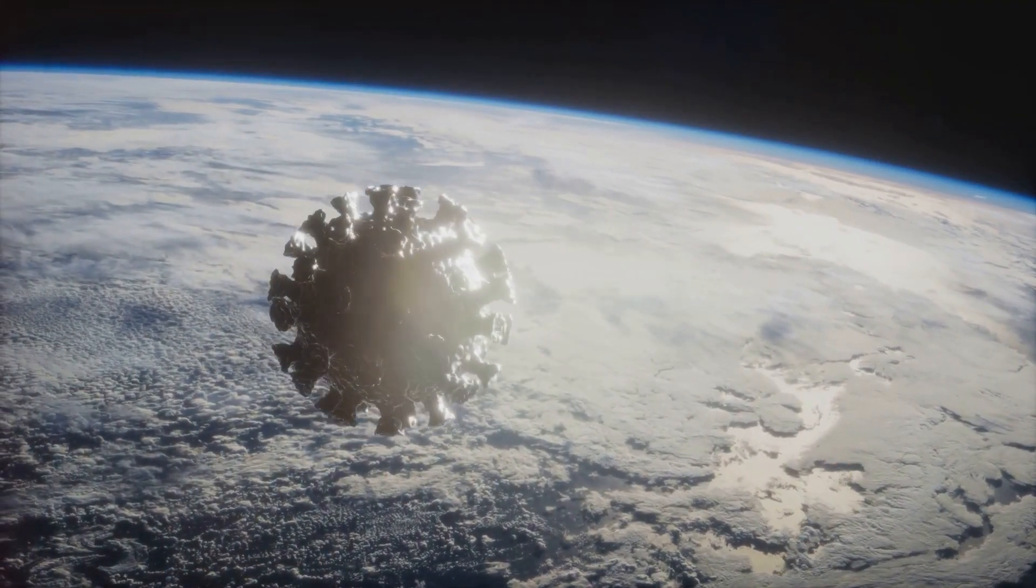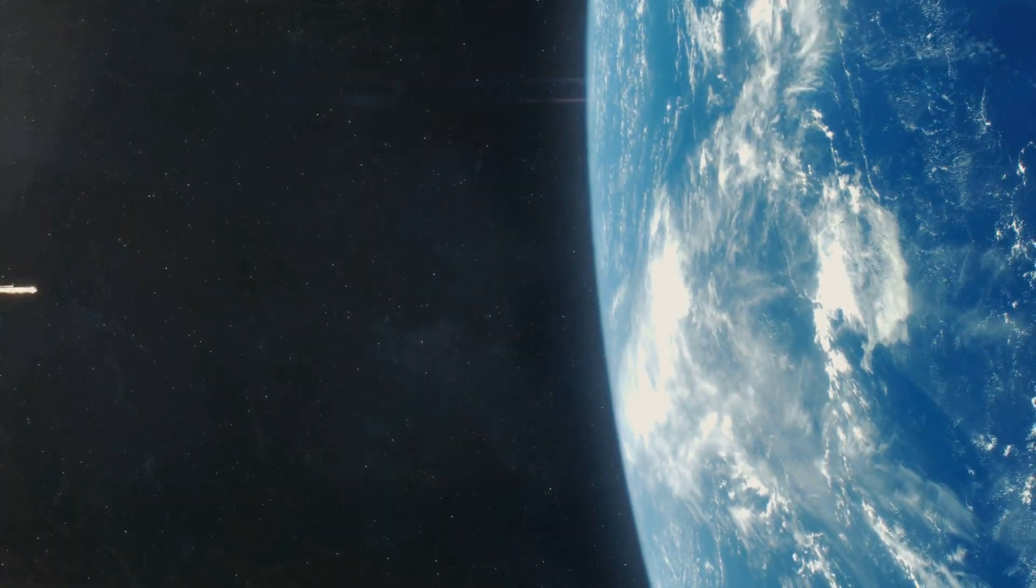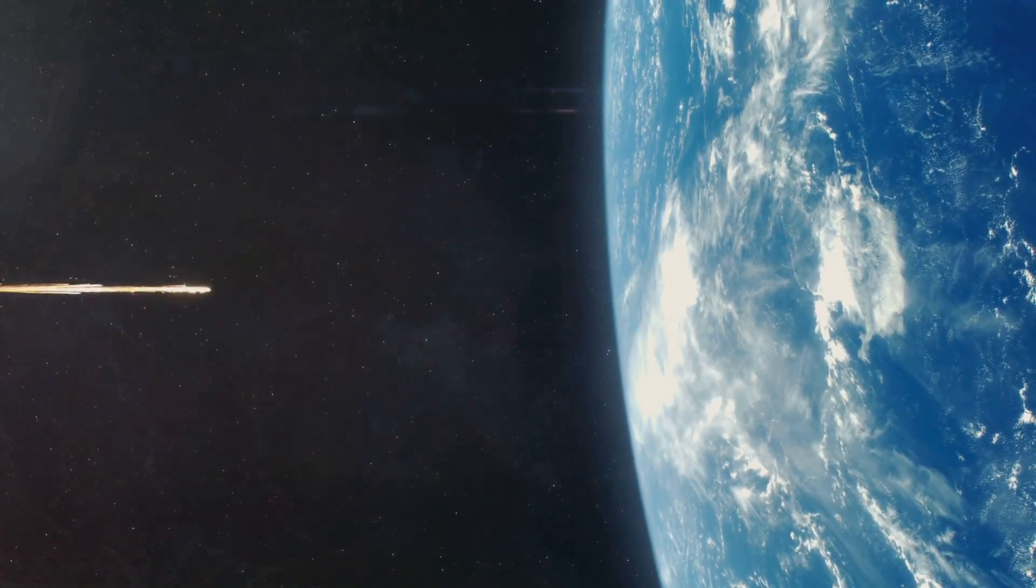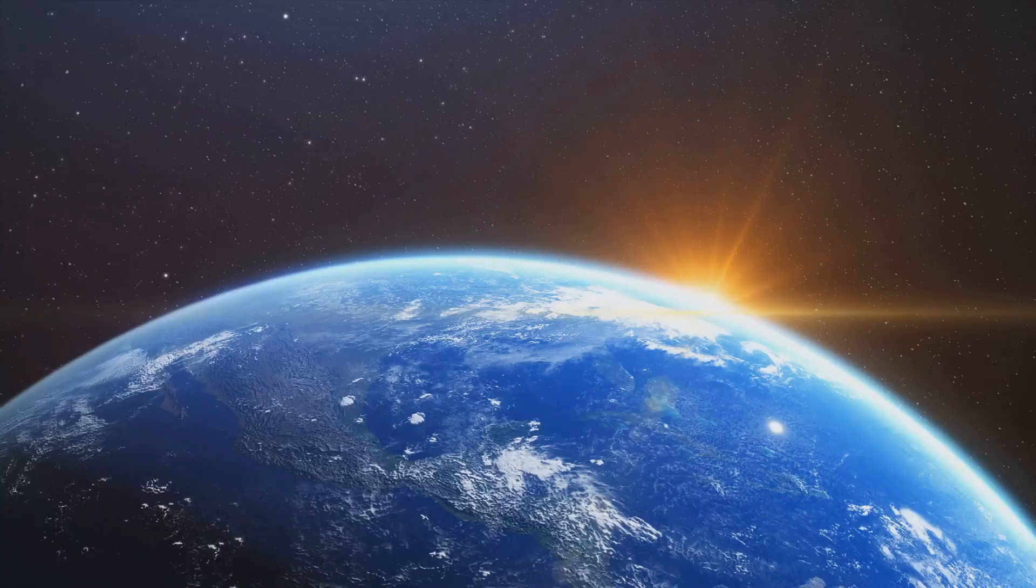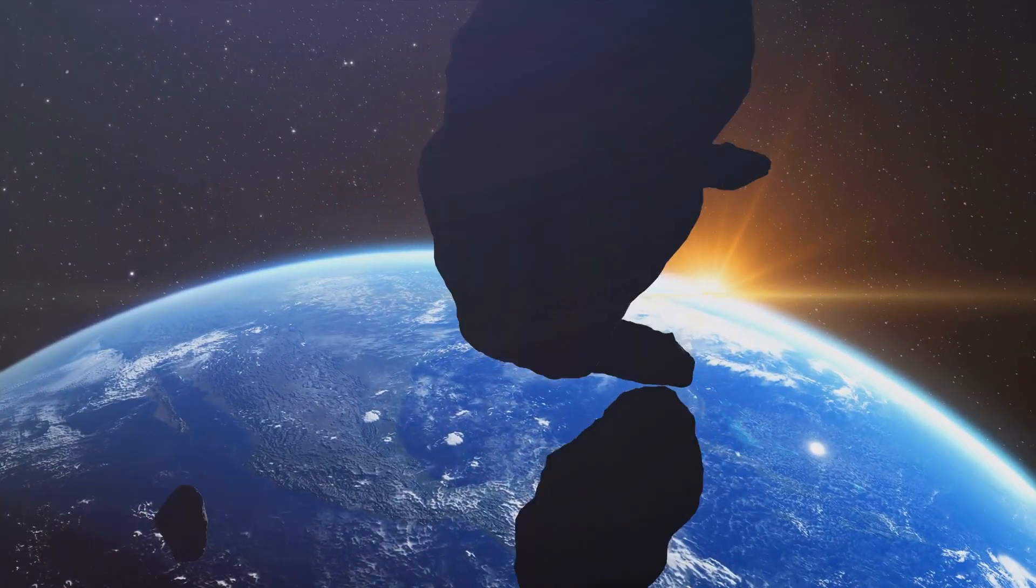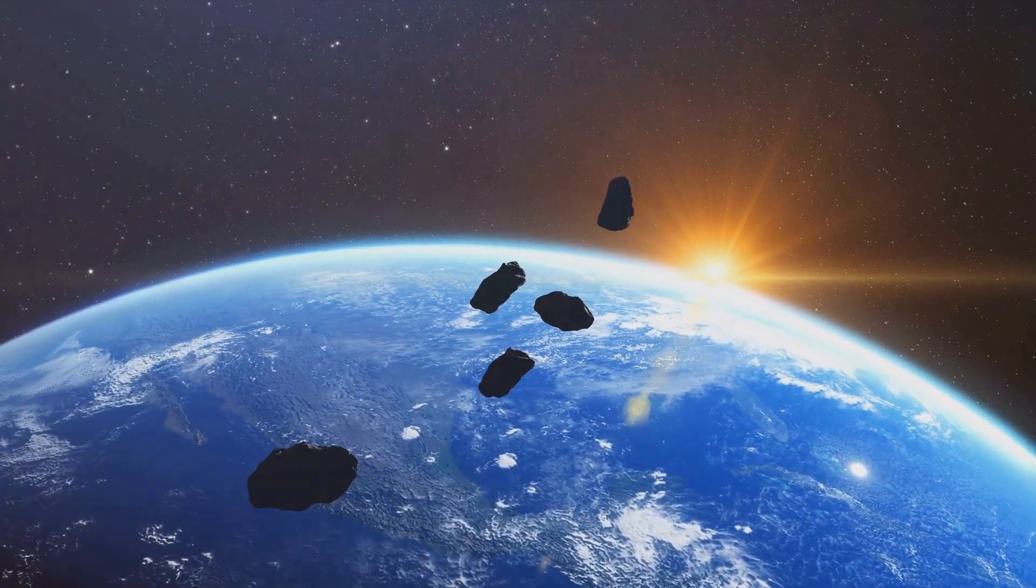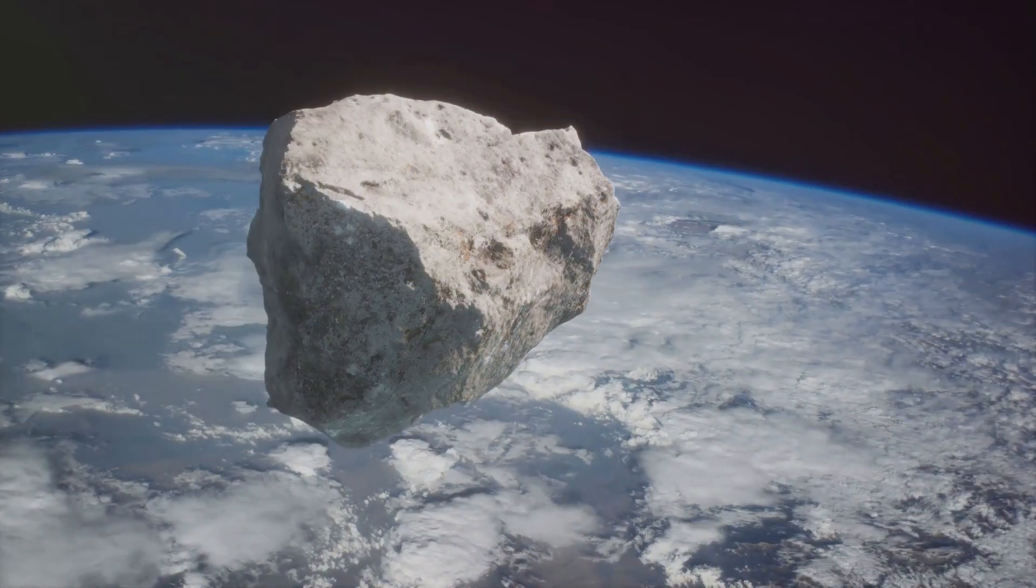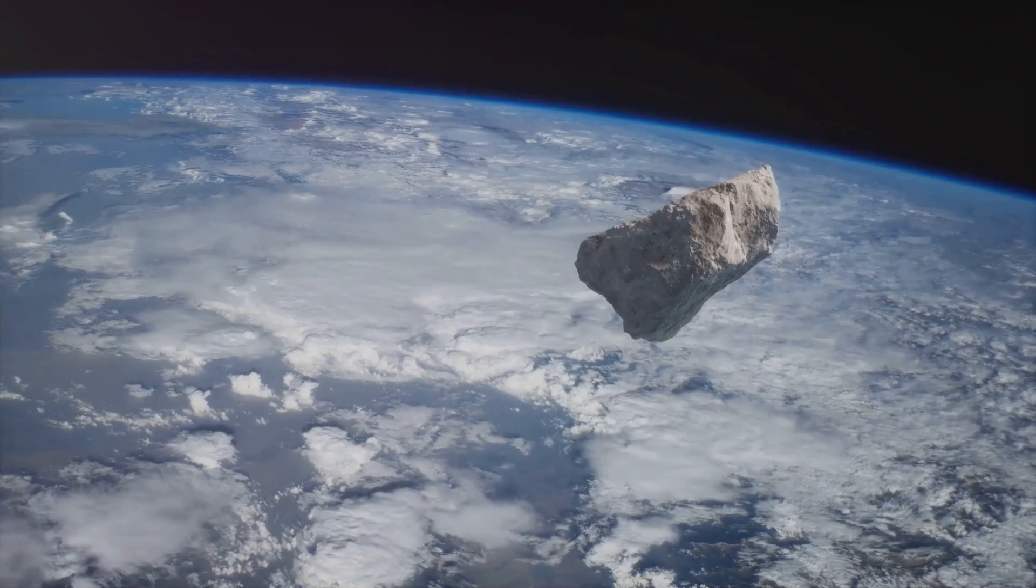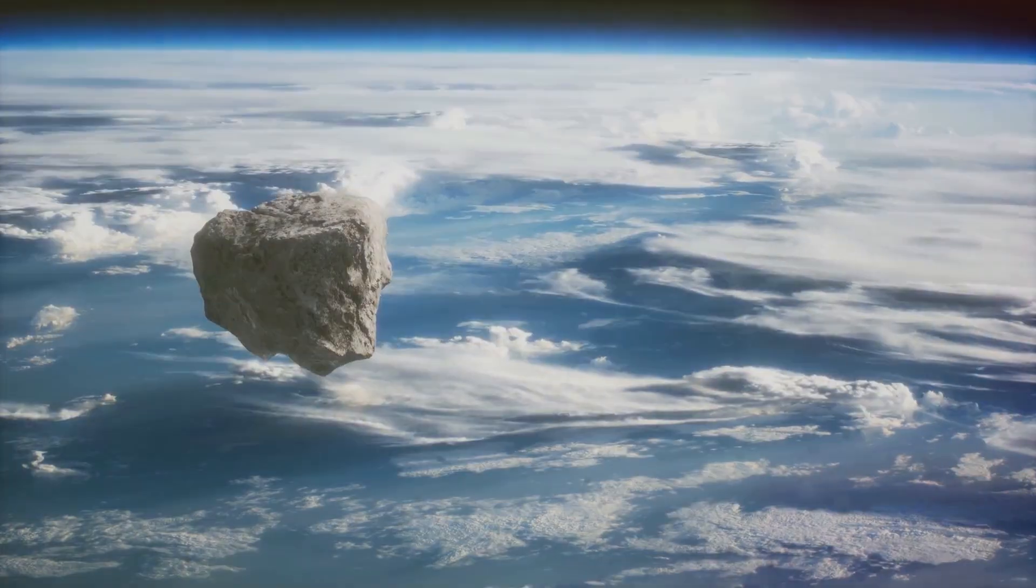But the catastrophe wouldn't end there. The impact would send billions of tons of dust and debris into the atmosphere, blocking out sunlight and plunging the world into what's known as an impact winter. This sudden drop in temperature could lead to a global famine, as crops fail and ecosystems collapse. Now this might sound like the plot of a Hollywood disaster movie, but it's a scenario that scientists take seriously. The good news is that the odds of Apophis colliding with Earth in 2029 are extremely low, about 1 in 150,000, and even if it were on a collision course with our planet, our understanding of asteroid deflection strategies has advanced significantly.